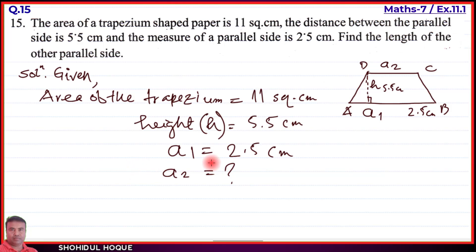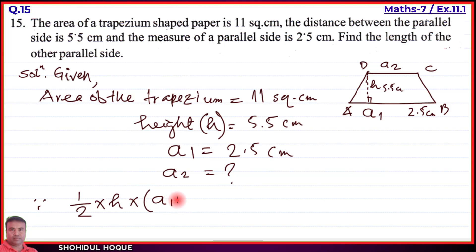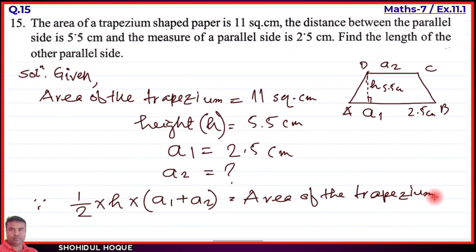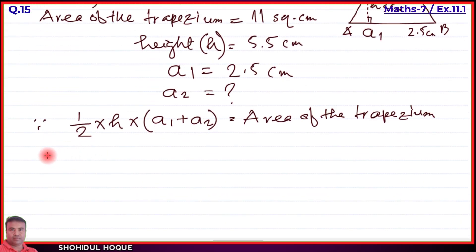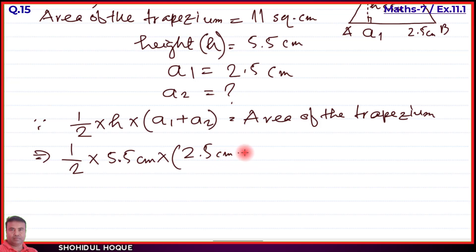To solve for a2, we write the formula for the area of a trapezium: Area = half into height into sum of the parallel sides, that is, Area = ½ × h × (a1 + a2). Substituting: ½ × 5.5 × (2.5 + a2) = 11 square centimeters.